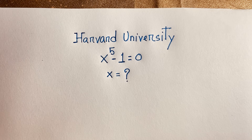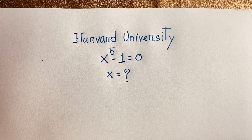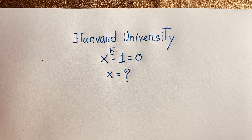Hello everyone. In this video we'll solve a nice exponential equation. The question is x to the power 5 minus 1 is equal to 0. We'll find out the value of x. Because the exponent is 5, we'll find 5 answers.